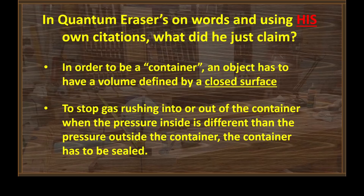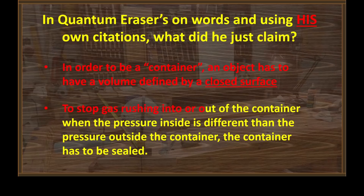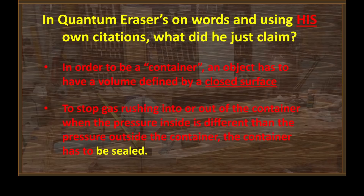What did he just claim? Well, first he claimed that in order to be a container, an object has to have a volume defined by a closed surface. Okay, I agree with that. Next, he claims that to stop a gas rushing into or out of the container when the pressure inside is different than the pressure outside, the container has to be sealed. Okay, I agree with that too. Enter the pipe.